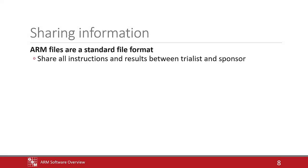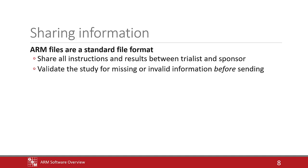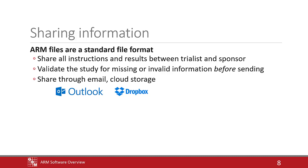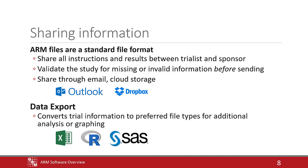ARM protocol and trial files are the standard format for sharing instructions and results of an experiment. There is no need for a separate Word document protocol or to send trial data via Excel if you have ARM. The validation feature in ARM performs consistency checks and ensures all required information is included before you share the study. ARM files can be attached to an email or saved to a cloud storage drive for easy sharing, and there are also a variety of data export options to convert trial information to preferred file types to analyze or graph data using other programs.